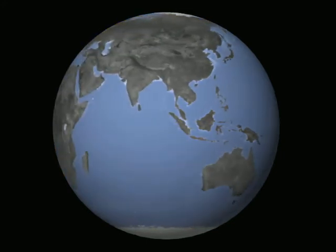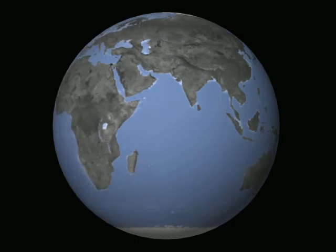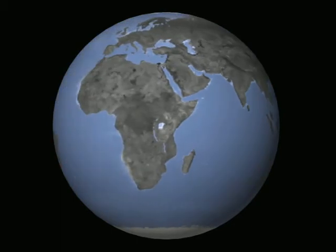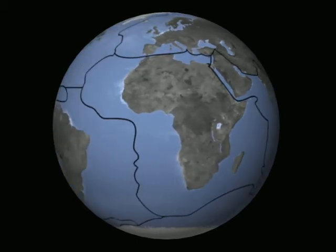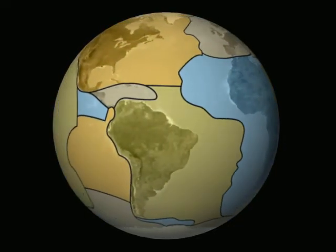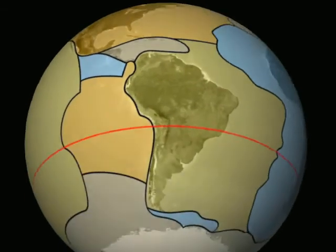Earth's crust does not form a single unbroken covering around the planet. Instead, it is divided into a dozen immense plates, about 100 kilometers thick, called lithospheric plates.